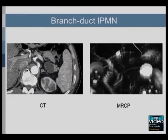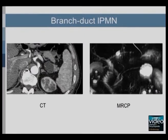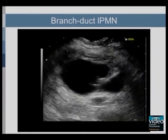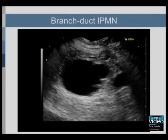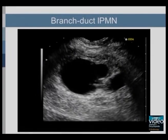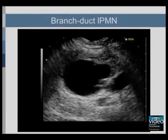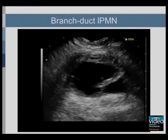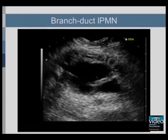In branch duct IPMNs, the branch duct is cystically dilated. MRCP may show the communication between the branch duct IPMN and the main pancreatic duct. On EUS, the branch duct is cystically dilated. Occasionally, the communication between the cystic lesion and the main pancreatic duct may be demonstrated.